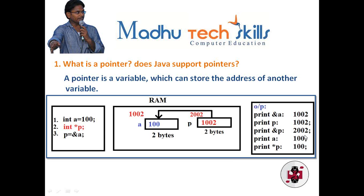A pointer is a variable where we can store an address. In a pointer variable I can store the address of another variable, the address of an array, the address of a structure, or the address of another pointer variable. So in a pointer variable I can store the address of another variable, a structure, an array, or another pointer.